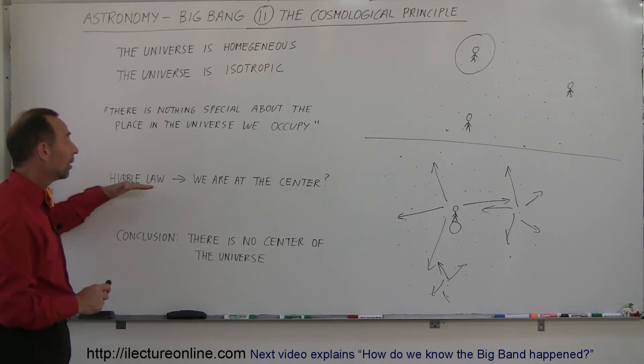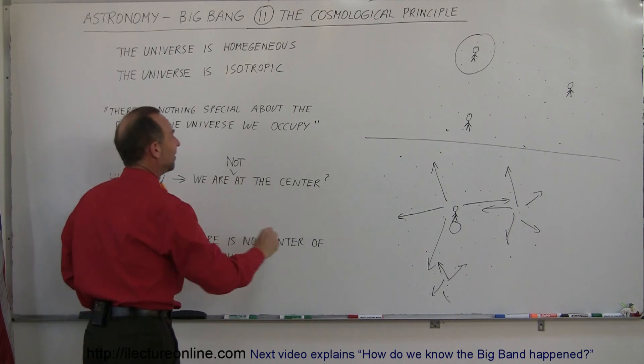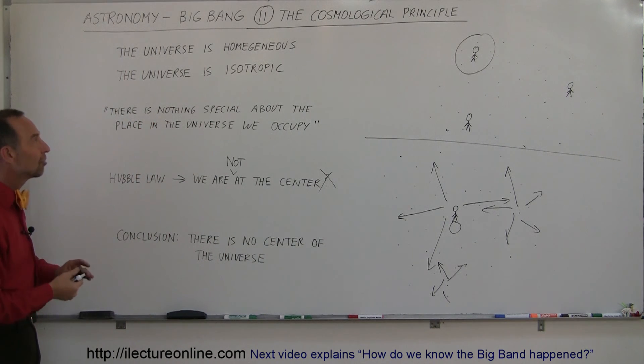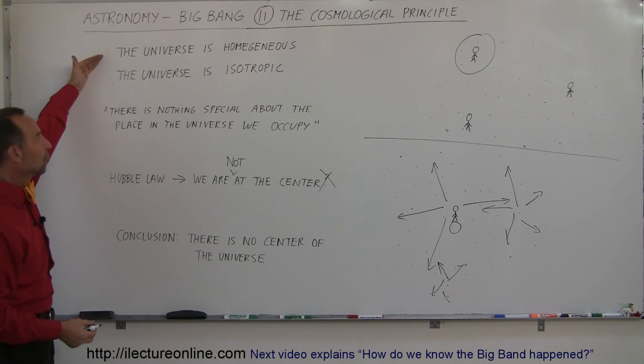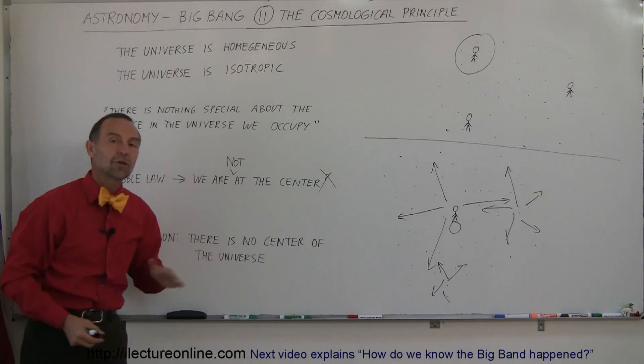Again, Hubble law indicated that we are not at the center of the universe. It turned out there was no indication based upon the fact that the universe is homogeneous, isotropic, and Hubble law, we could conclude there is no center of the universe.